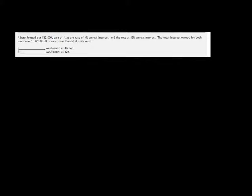All right, so this is 5.9 number 2. A bank loaned out $22,000, part of it at the rate of 4% annual interest, and the rest at 12% annual interest. The total interest earned for both loans was $1,920. How much was loaned at each rate?